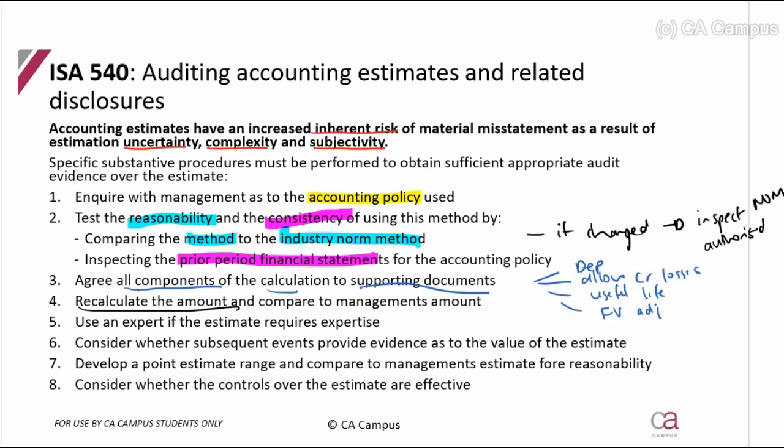If the calculation is complex, use an expert. When using an expert, test whether the expert is competent, capable, and independent. We can also consider information from subsequent events to help determine the value of the estimate. Because an estimate is a projection, when the final result occurs after year end, you can compare it to the estimate to assess whether an adjustment is needed. Use post-reporting-date events to assist in determining whether the estimate was calculated fairly.